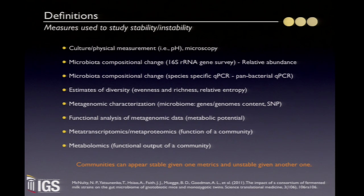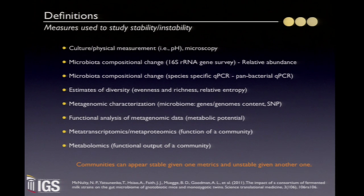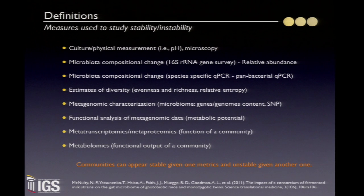Composition metrics include gene surveys to get relative abundance, as well as work — for example, by Dave Frederick in the vaginal microbiota — that looks more at specific species using qPCR, where you really get to the true abundance of some members of that community.